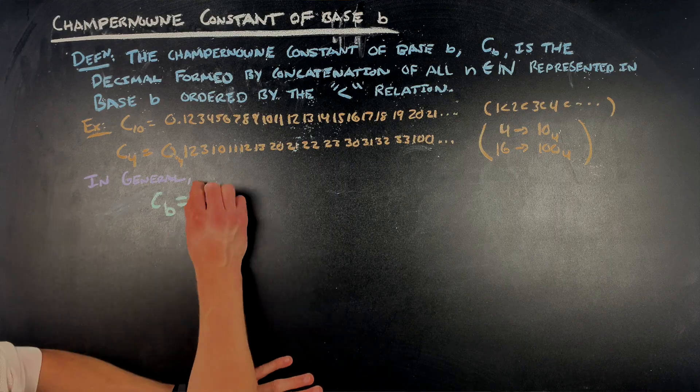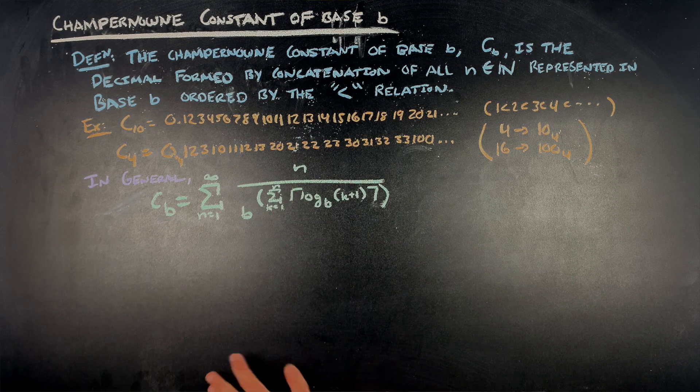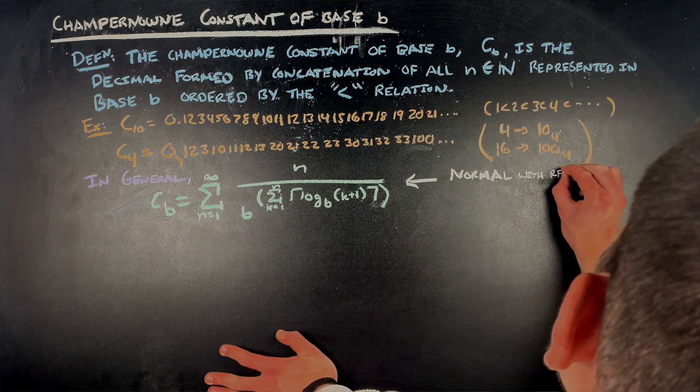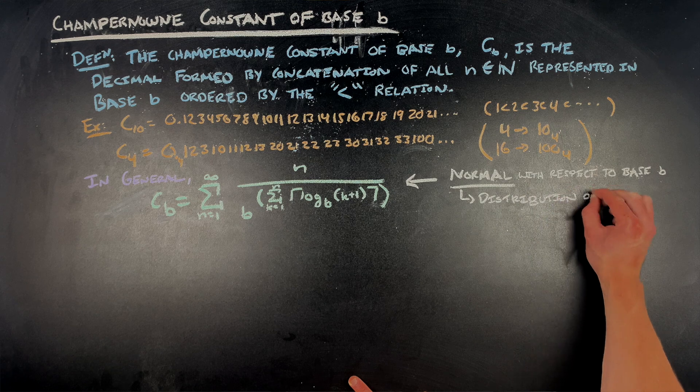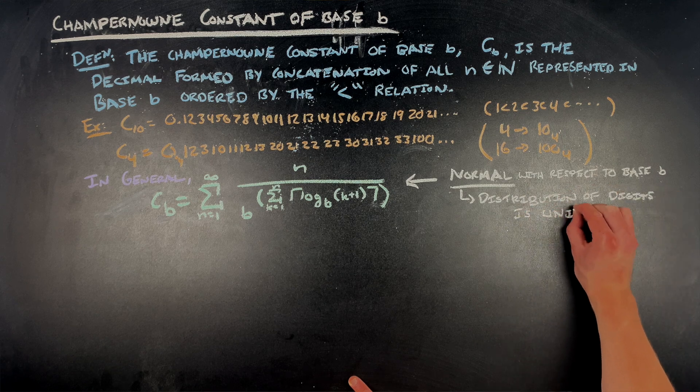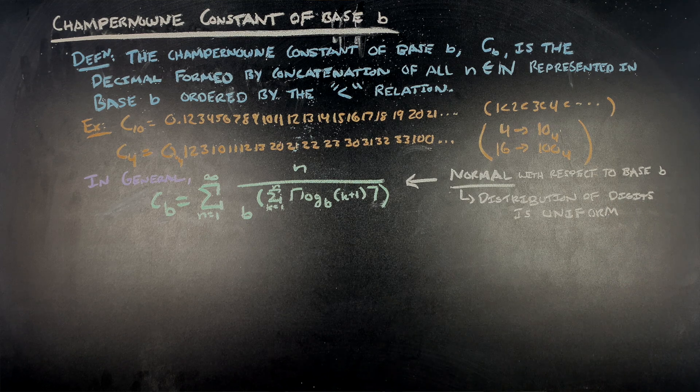The first interesting thing about these constants is that they are normal with respect to the base they're generated with. This was shown in the early 1990s for all C sub b with respect to their base b, and it essentially means that the distribution of digits throughout the constant is uniform. So for C10, 0 through 9 all occur with equal probability throughout the number. Normalcy of numbers falls more on the probability and statistics side of number theory, but there are some topological connections here that have to do with things like Baire category that are kind of interesting.